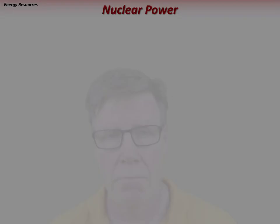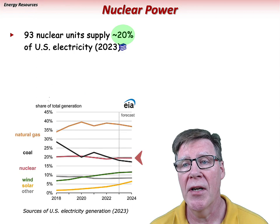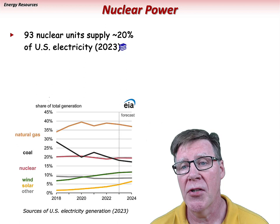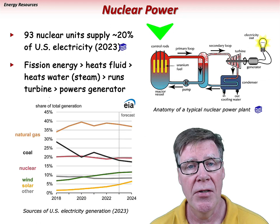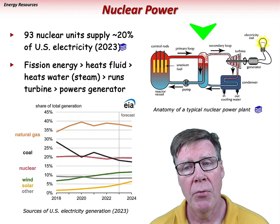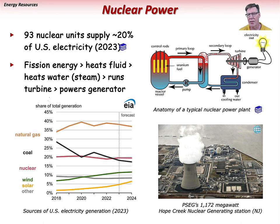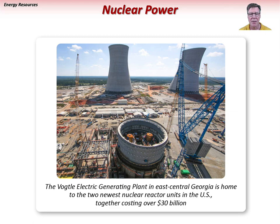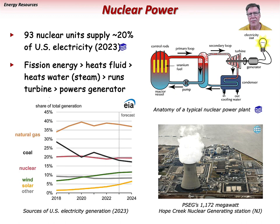Nuclear power is another non-renewable energy resource. In the U.S., about 93 nuclear units supply roughly 20% of electrical demands as of 2023. The electrical generation process is fairly similar to that of a coal or natural gas-fired power plant: the nuclear reaction is regulated by control rods, heats pressurized water, which creates steam that runs a turbine powering a generator. Nuclear power has been widely demonized due to the toxic nature of spent nuclear fuel and control rods, but nuclear power provides one-fifth of U.S. electricity and simply ending it is not a realistic option.